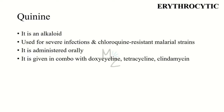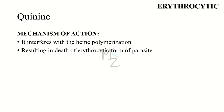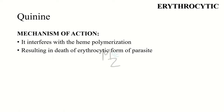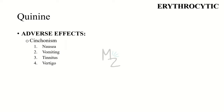The next drug is quinine, an alkaloid originally isolated from the bark of the cinchona tree. It is used for severe infections and chloroquine-resistant malarial strains, administered orally in combination with doxycycline, tetracycline, or clindamycin. Mechanism of action: it interferes with heme polymerization, resulting in the death of the erythrocytic form of the Plasmodium parasite. When taken orally, quinine is well distributed throughout the body. The major adverse effect is cinchonism — a syndrome causing nausea, vomiting, tinnitus, and vertigo. Use of quinine is stopped when hemolytic anemia occurs.